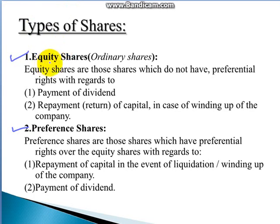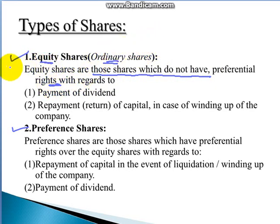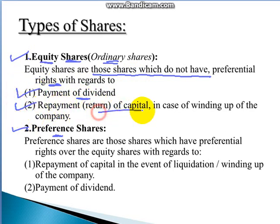Equity shares are ordinary shares — those which do not have preferential rights. Preference shares have some preferential rights that ordinary equity shares do not have. Equity shareholders receive two key benefits: first, payment of dividend; and second, repayment or return of capital in case of winding up of the company.